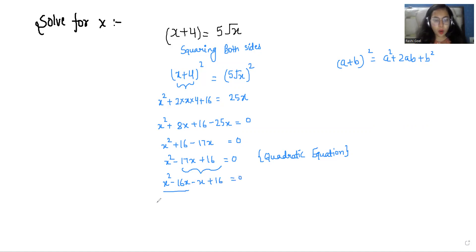I will take x common from first two terms. Now x - 16 and here I will take minus 1 common. So x - 16. So our first factor is x - 1 and our second is x - 16 equals 0.